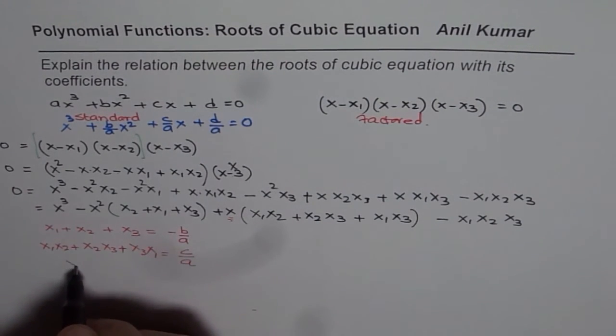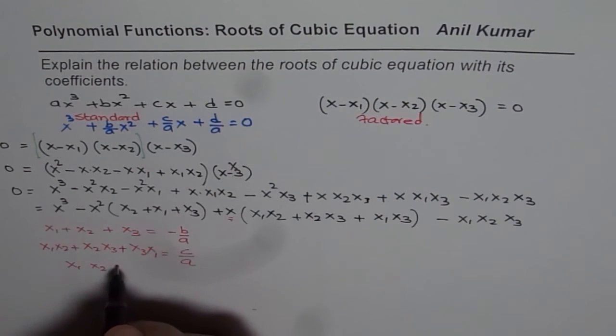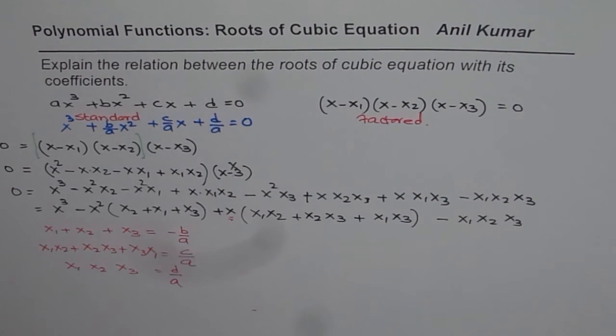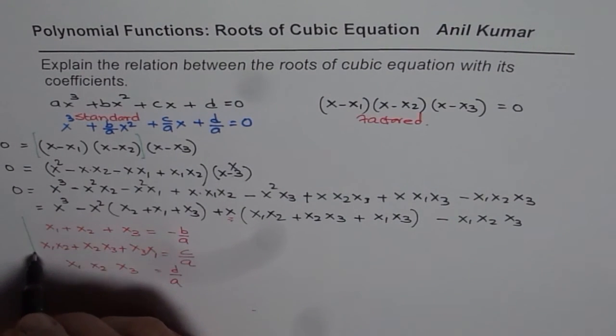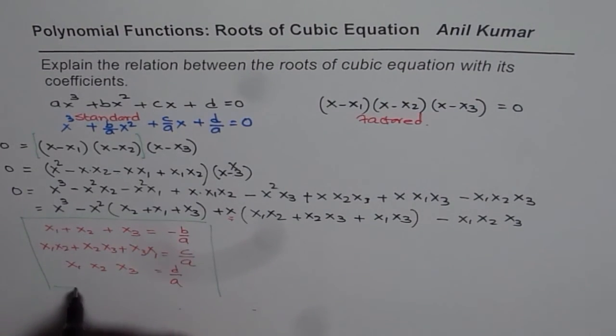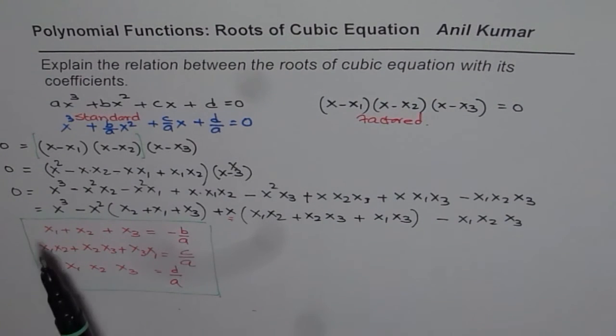So we have product of roots x₁x₂x₃ equals to d/A. So that is how we find that the roots of cubic equation are related with the coefficients in the standard form of a cubic equation. So sum of roots is equal to -b/A.